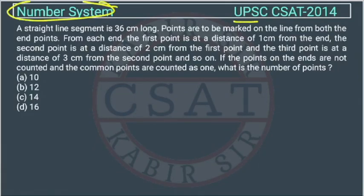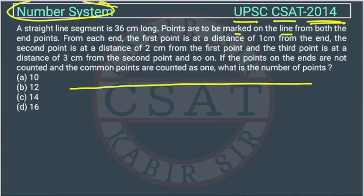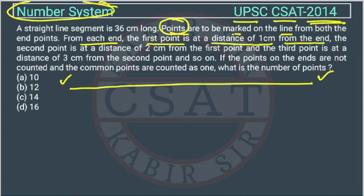This is a question from the number system, asked by UPSC in the CSET paper of 2040. A straight line segment is 36 centimeters long. Points are to be marked on the line from both ends — from this end and from this end as well. From each end, the first point is at a distance of 1 centimeter from the end.